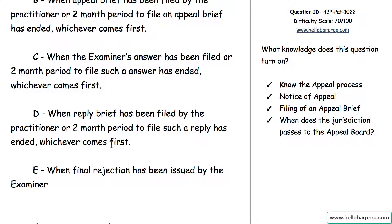Answer choice E: when a final rejection has been issued by the examiner — no. When a claim has been rejected twice, that's when you go to the appeal. When you go to the appeal process, you start with a notice of appeal, followed by your appeal brief, generally responded to by the examiner's reply, then generally responded to by the applicant's reply. At that point, jurisdiction passes on to the board. So the correct answer is D.